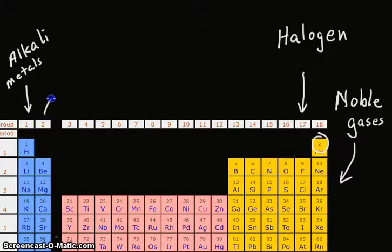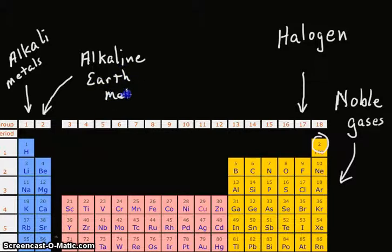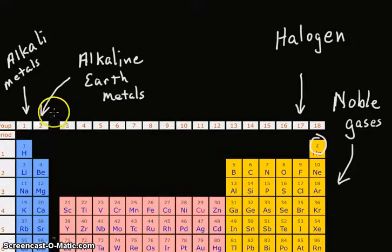And the same goes for the others. Group number two, those are the alkaline earth metals. Let's see if I can spell this right. Neatly. Alkaline earth metals. And these are less reactive because they have to get rid of two electrons. So it's a little bit harder to get rid of two than to get rid of one. And so if these are trying to get rid of two, this group here.